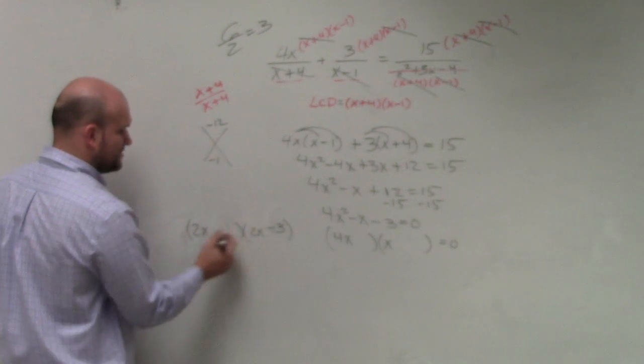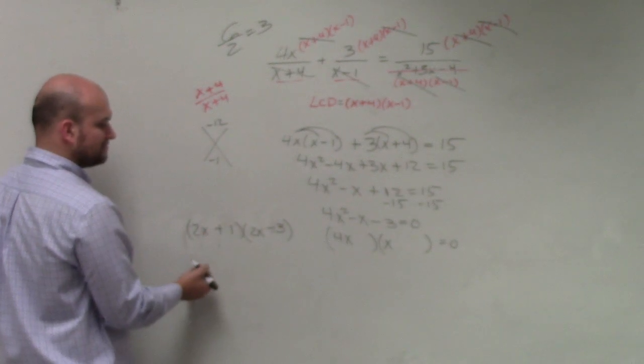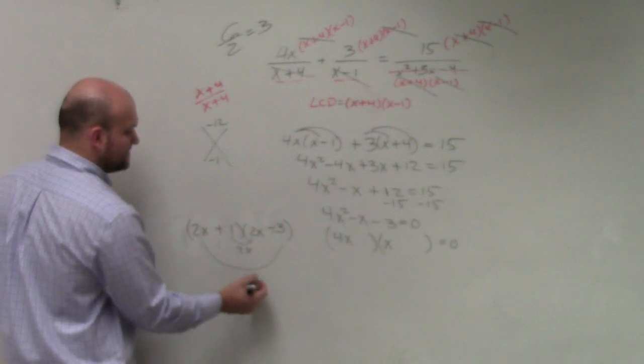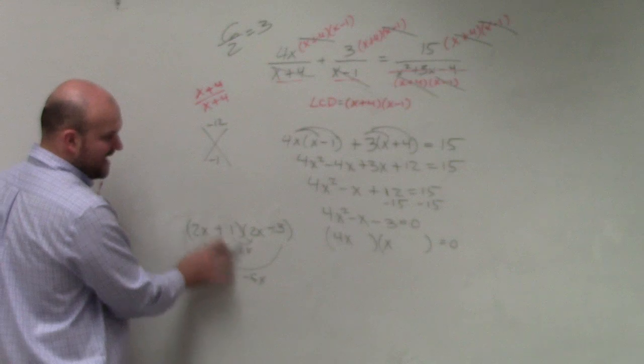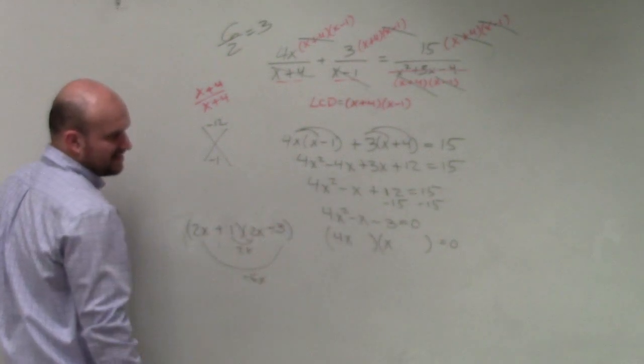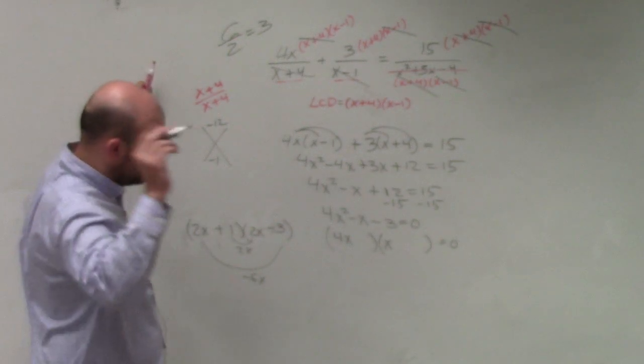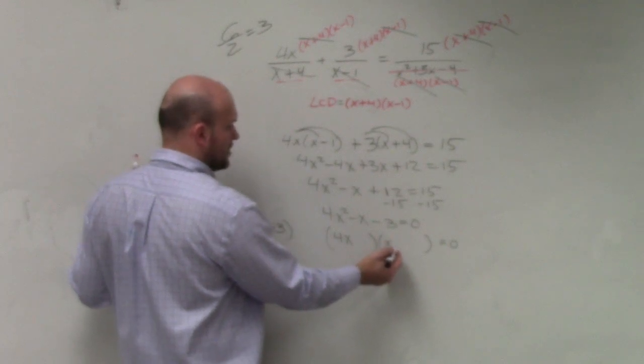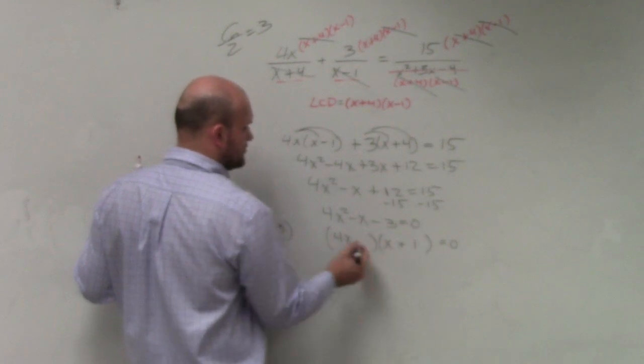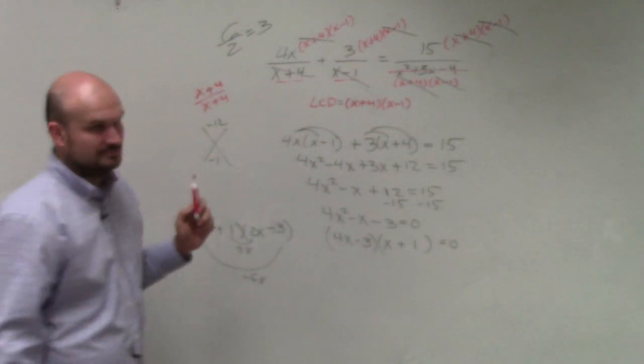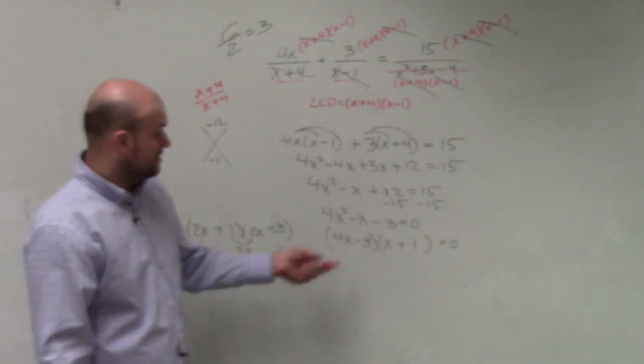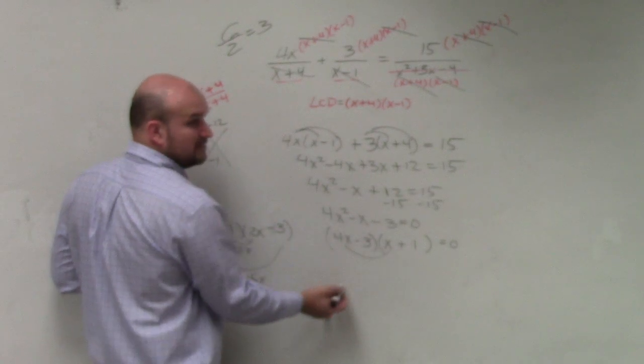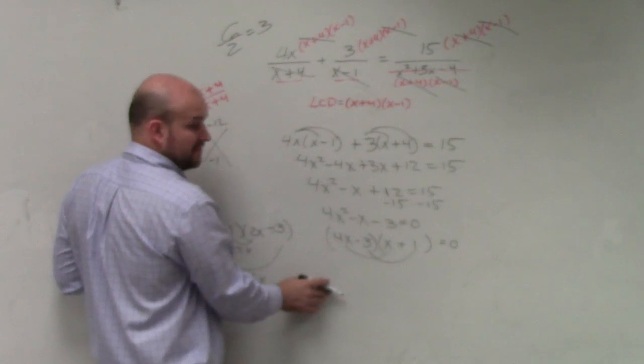Because think about it. If I did minus 3 and plus 1, this gives me 2x and that gives me negative 6x. Adding those together is not going to give me a difference of x. However, I got it. However, what if I did, I'll do the wrong one first, plus 1 and minus 3. What if I did this? Well, does 4x times x give you 4x squared? Does negative 3 times 1 give you negative 3? Yes.